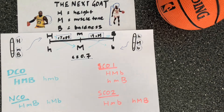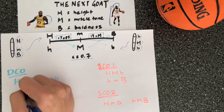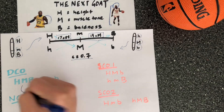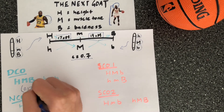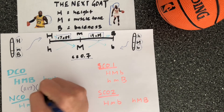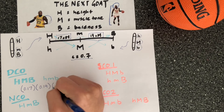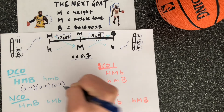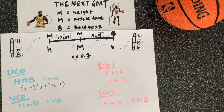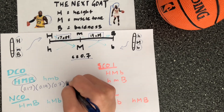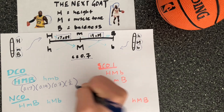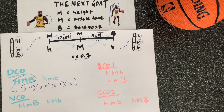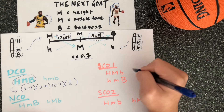These are the different gamete types that can result from this heterozygous individual. You can determine their probabilities using specific formulas. For the double crossover event, you multiply the recombination probabilities — that is, the distance between the loci divided by 100 — so 0.17 times 0.19, then multiply by the coefficient of coincidence. To get the probability of a specific double crossover genotype, you divide by two, because either one of the two could happen.